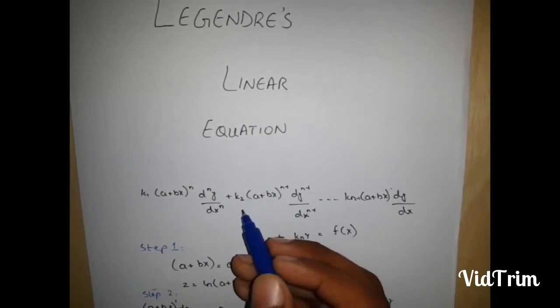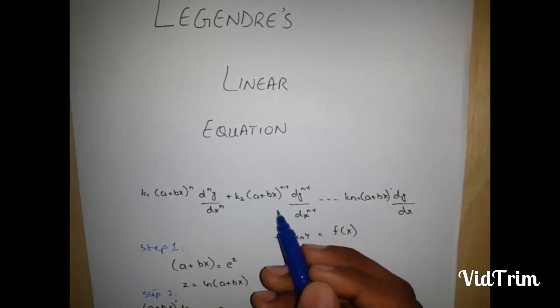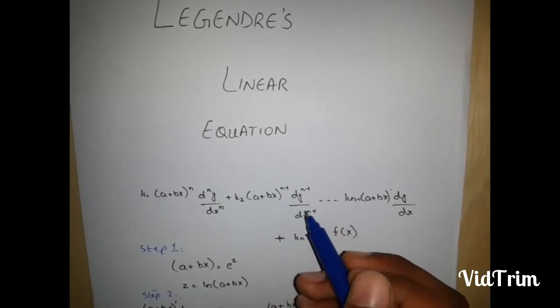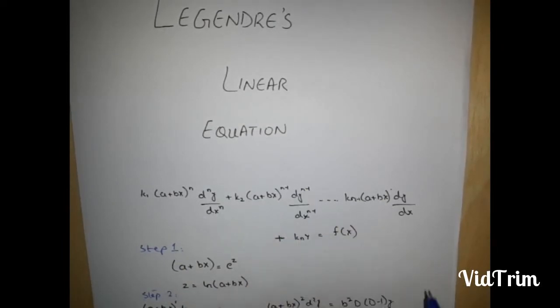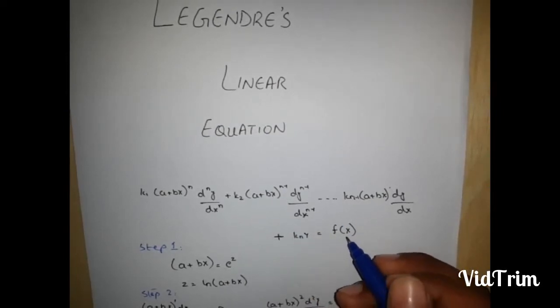Plus k2, which is another constant, a plus bx this term n minus 1 dy upon dx n minus 1, and so on, is equal to f which is function of x.